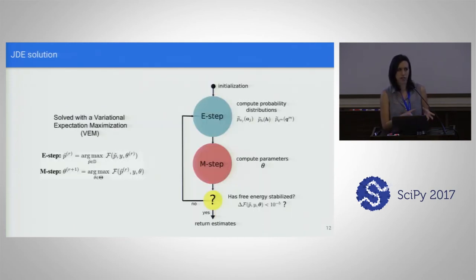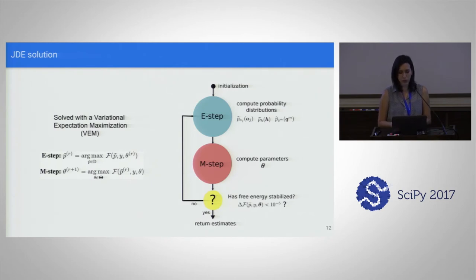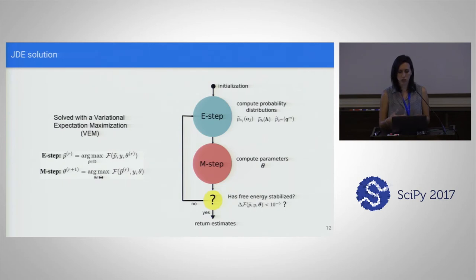We have our variational framework and priors. The way we solve it is with a variational expectation maximization, in which we iteratively maximize a cost function — a negative free energy — in two steps. In one step we compute the probability distributions of the variables we want to get, and in another step we compute the parameters of the model. We repeat this until everything stabilizes.